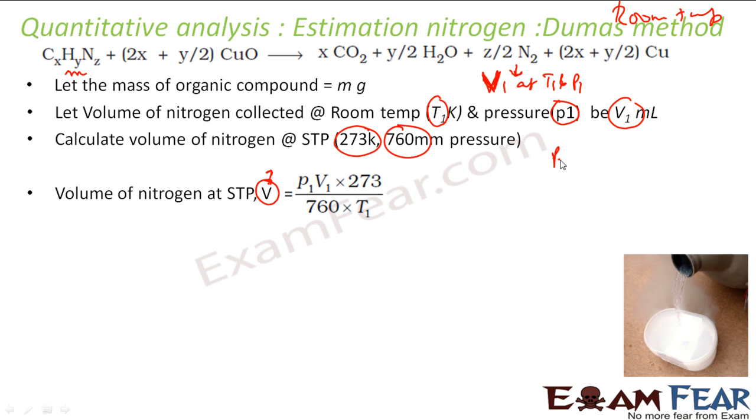So if you use the formula, P1V1 by T1 is equal to P2V2 by T2. These are all STP. So you put the values, I have P1, V1, T1. This P is nothing but, sorry, this P is 760 and this T is 273. This is P1, V1, T1. So if you equate this you get V is nothing but 273V1P1 by 760T1. This is what you will get. You can solve this, you will get the same thing. So I got the volume of nitrogen at STP. This is critical here.